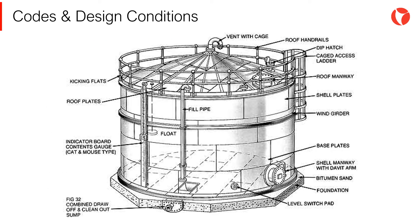A storage tank is formed by different parts as shown in the picture. The main three parts are the shell of the tank, the roof of the tank, and the bottom or base of the tank.